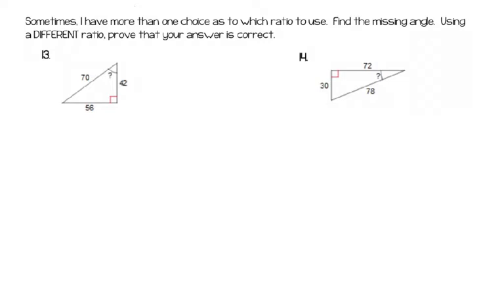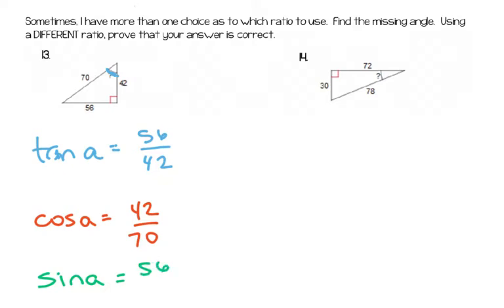Now going to the last couple of questions. Sometimes I have more than one choice as to what ratio to use. So to find the missing angle, we can use a different ratio. We're going to use one ratio, then use a different ratio to prove that we're right. If I'm trying to find this angle right here, I've got all three sides. So I could do tangent A is equal to opposite over adjacent. What else could I use? I could say cosine A is equal to adjacent over hypotenuse. I could say sine angle A is equal to opposite over hypotenuse. And so I can use any of those.